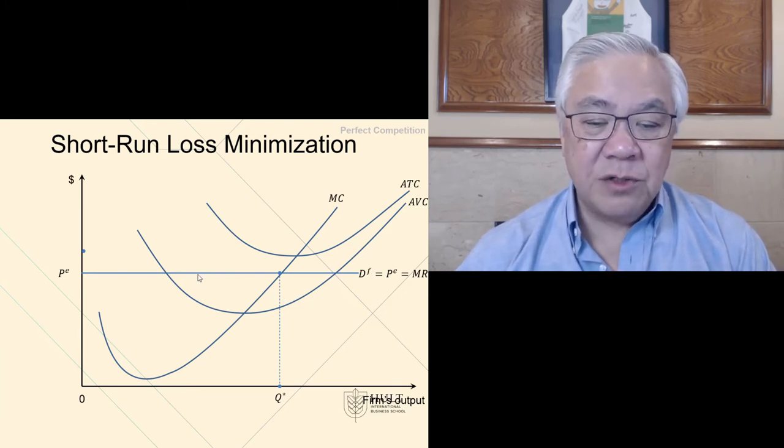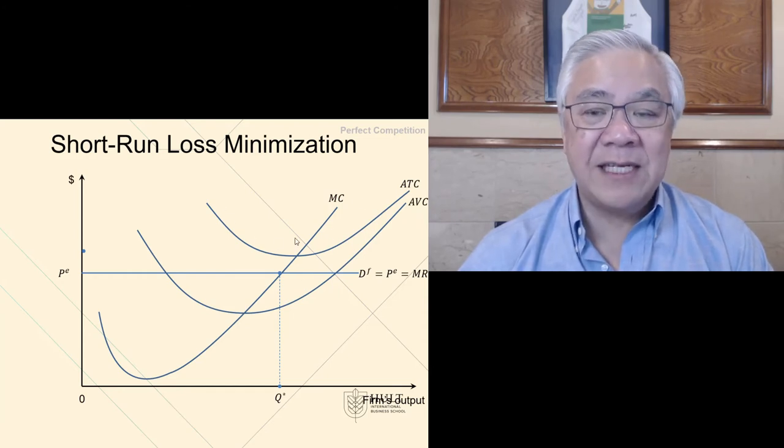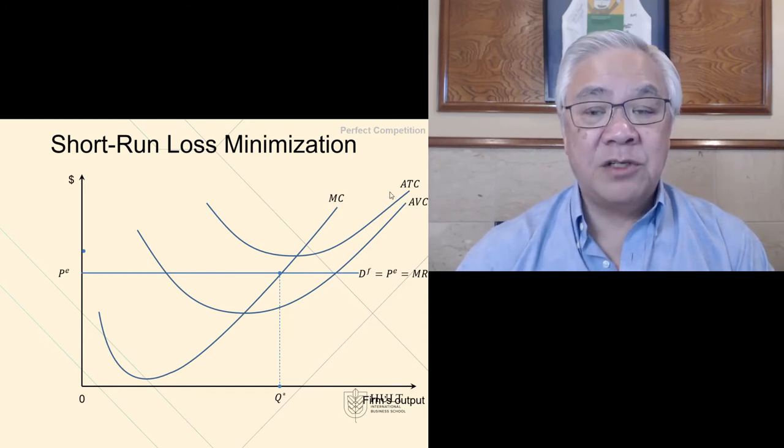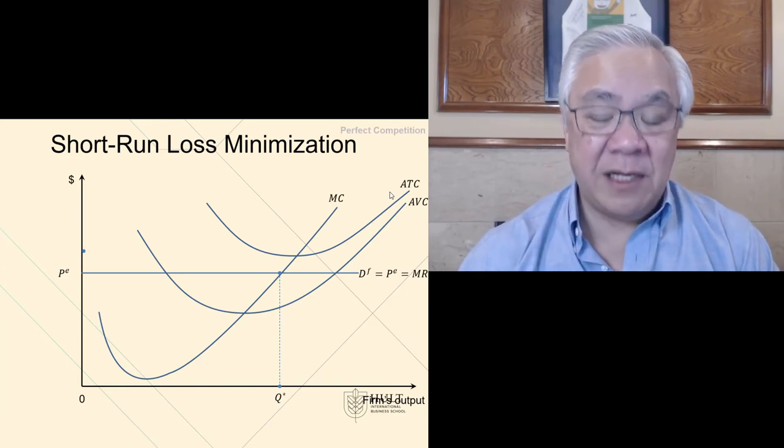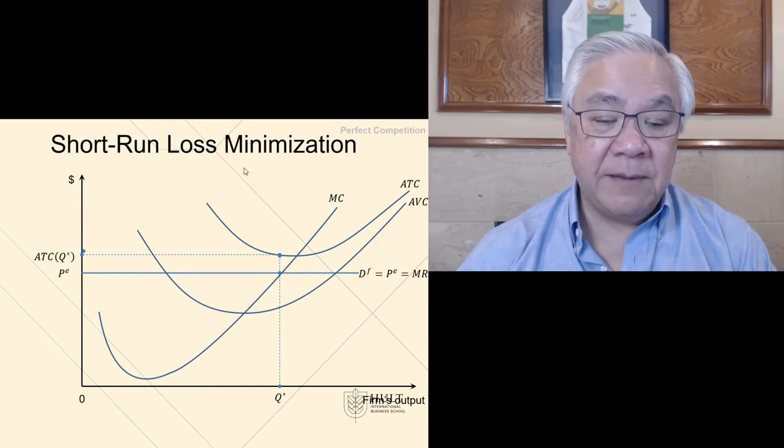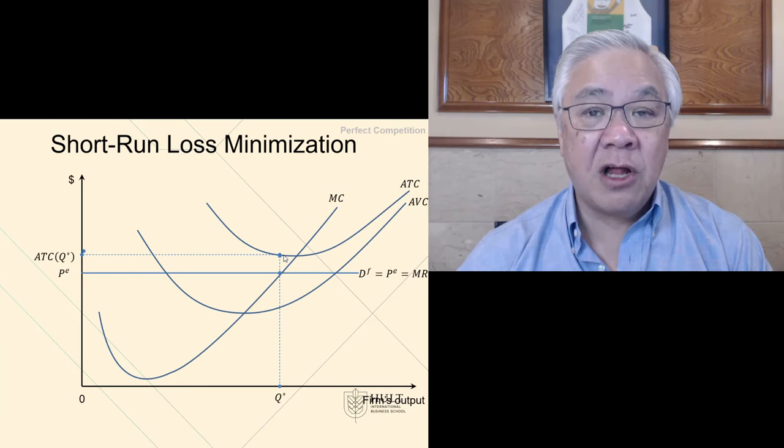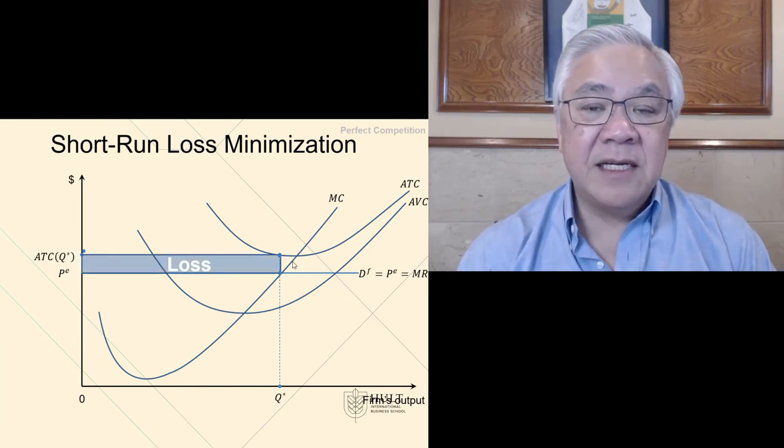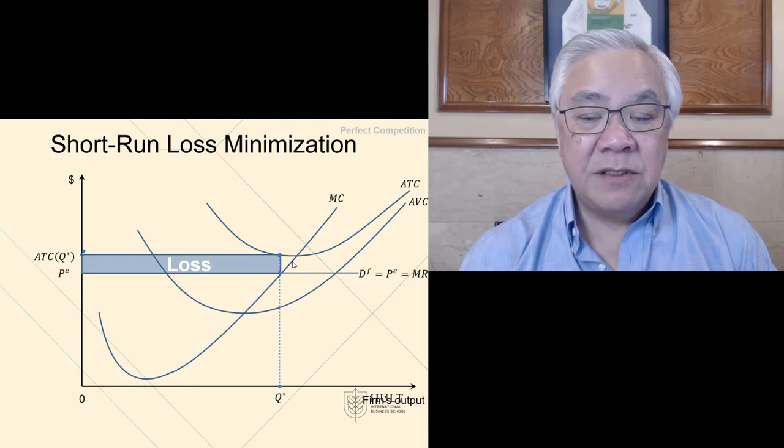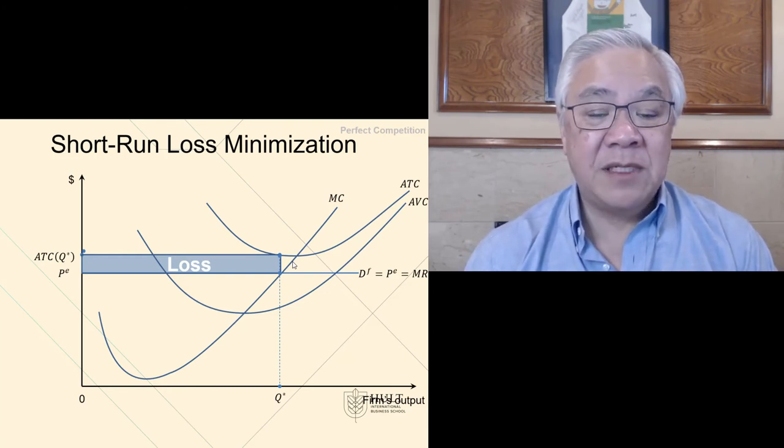We see that the marginal revenue is this horizontal line and yet the average total cost curve is above the marginal revenue line, which means your costs are greater than your revenue. Specifically, this box here, the bottom one, is the revenue. This box here, the taller one, are your costs and therefore we have a loss. In this condition, we have a loss equal to the difference between the average total cost and the price times the quantity.